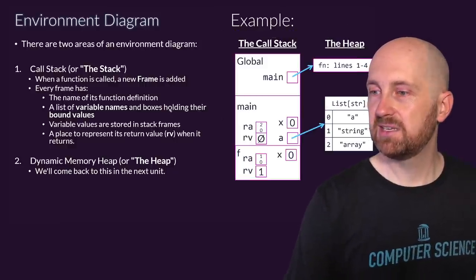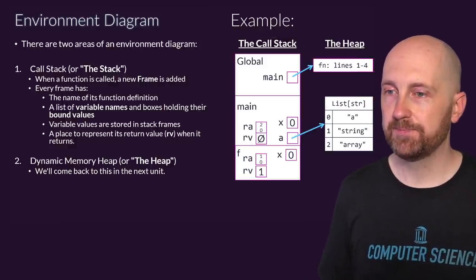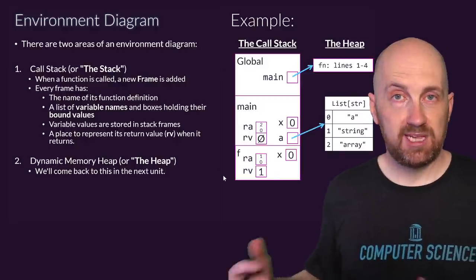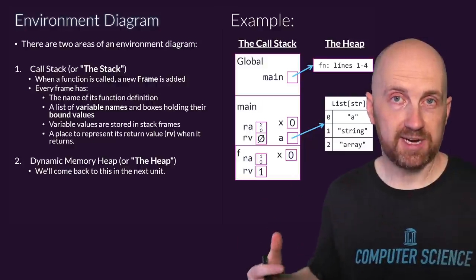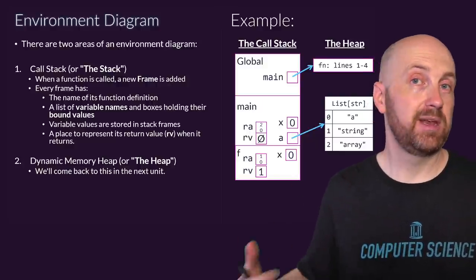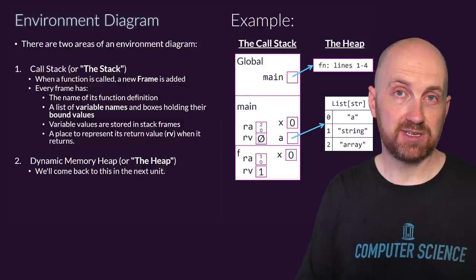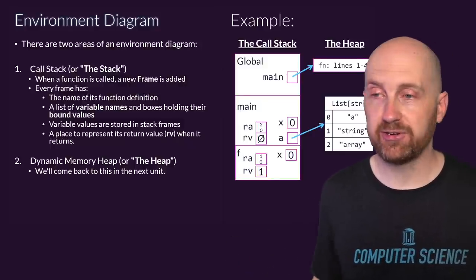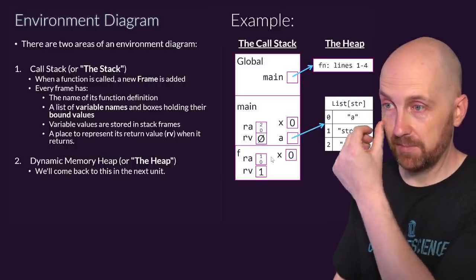We'll come back and discuss these areas in more depth in just a moment. We'll spend more time on the heap as we move into using more complex objects such as lists that can store many values of any type — they're a sequence, like a string is a sequence, but they allow us to store things that are bigger than characters in a sequential arrangement.